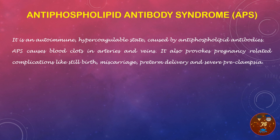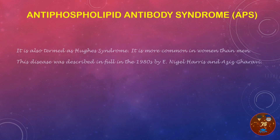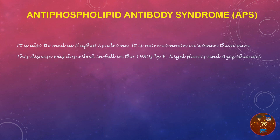APS causes blood clots in arteries and veins, the two main targets in the body. It also provokes pregnancy-related complications like stillbirth, miscarriage, preterm delivery, and severe preeclampsia. APS is also termed Hughes syndrome, and it is more common in women than men. This disease was fully described in the 1980s by Nagel and Aziz.